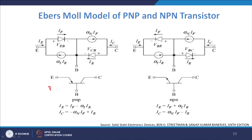The Ebers-Moll model can be expressed for both NPN and PNP transistors. For NPN: IE = IF + αR×IR and IC = αF×IF − IR. For PNP, there is a gain available, giving a different form. The model captures both forward and reverse current components for each transistor type.